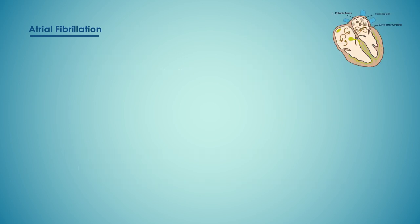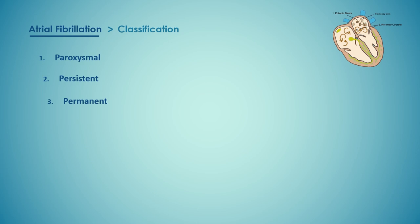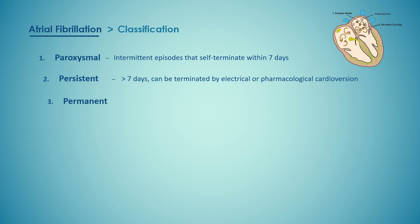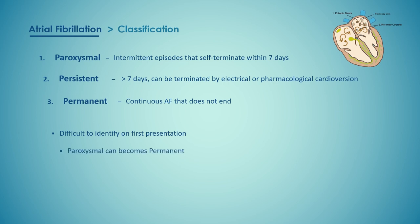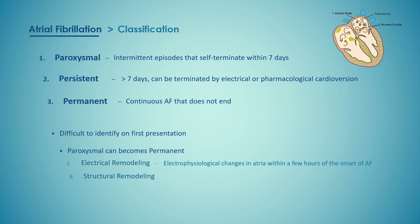AF is commonly classified as paroxysmal, persistent, or permanent. Paroxysmal AF consists of intermittent episodes that self-terminate within seven days. Persistent AF involves prolonged episodes of more than seven days that can be terminated by electrical or pharmacological cardioversion. Permanent AF is continuous atrial fibrillation that does not end. Unfortunately for many patients, paroxysmal AF becomes permanent as the underlying disease progresses, partly because of electrical remodeling — electrophysiological changes that occur in the atria within hours of onset of AF. When AF persists for months, structural remodeling also occurs, leading to atrial fibrosis and dilatation that predispose to chronicity.